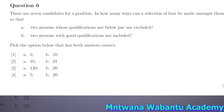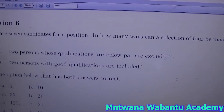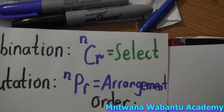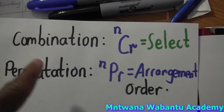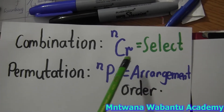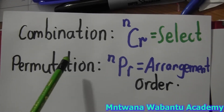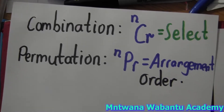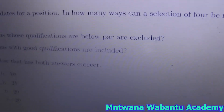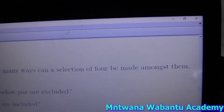The question says there are seven candidates for a position. In how many ways can you make a selection? Whenever they mention selection, just remember: selection always means combination. So whenever I talk about selection it is combination, and when I talk about arrangements or order that is permutation. If you're picking something from a group, that's a combination.